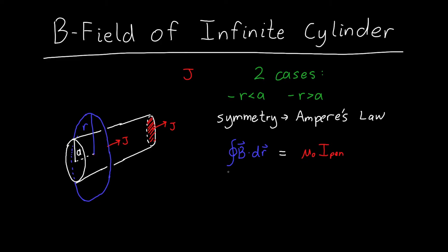So let's start with the right hand side, because this isn't going to change much when we have r less than a and r greater than a. We know that because the current is going this way, the magnetic field is going to curl around it like this, pointing in these directions around the loop.